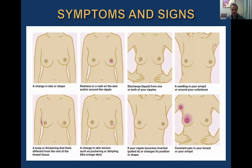Clinical signs of breast cancer found during examination include: change in size or shape of the breast, redness or rash of the skin, discharges from the nipple, swelling in the armpit, a lump or thickening that feels different from the rest of the breast tissue, change in skin texture such as puckering or dimpling, or constant pain in the breast not related to the menstrual cycle.